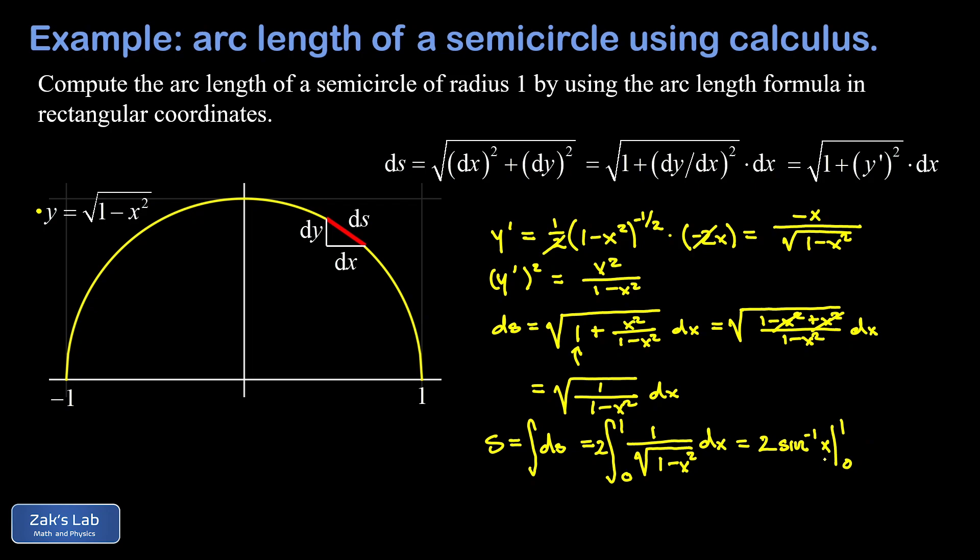So when I plug in the zero there, I get the inverse sine of zero. In other words, the angle whose sine is zero. And that's zero. So I don't have to worry about the lower limit. All I have to worry about is the upper limit. And I need to figure out the angle whose sine is one. Well, that's just pi over two. So I end up with two times pi over two. And that reduces to pi. And we've got the arc length of the semicircle.